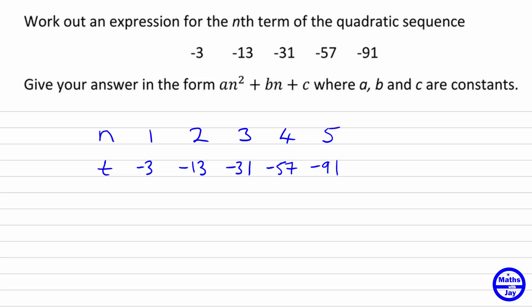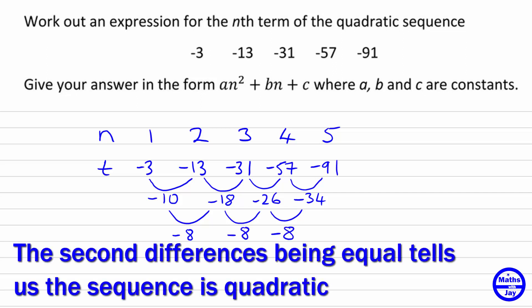So what we're going to do is find the difference between these terms. We can see that we're subtracting 10 to get from the first to the second term, and then we're subtracting 18 to get from negative 13 to negative 31. Then we're taking away 26 to get to negative 57, and then the final difference is negative 34. Finding the differences between those differences, we find that each time we get the same number. So that tells us we've got a quadratic sequence.